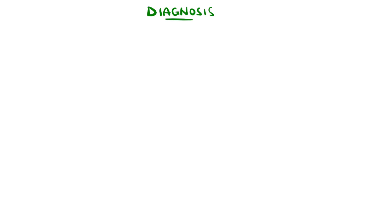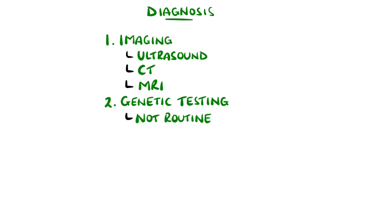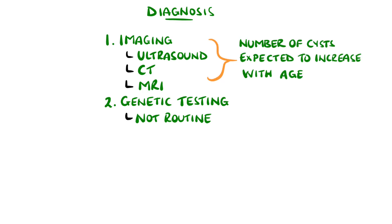The diagnosis might be initially suspected from the history and physical exam, and from there, imaging like ultrasound, CT, or MRI is done. In some cases, potentially with family planning, genetic testing can also be done, but this is not routine. In general, as part of the diagnosis, the number of cysts present are counted and correlated with age.